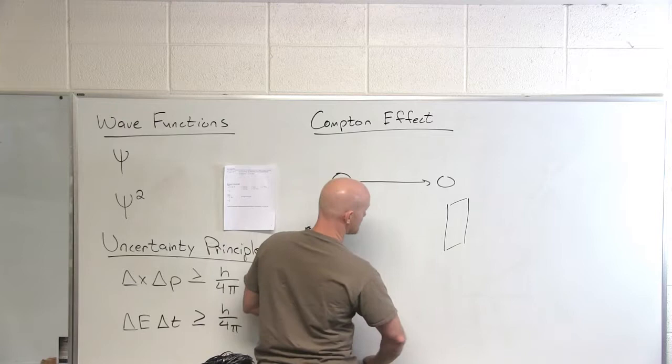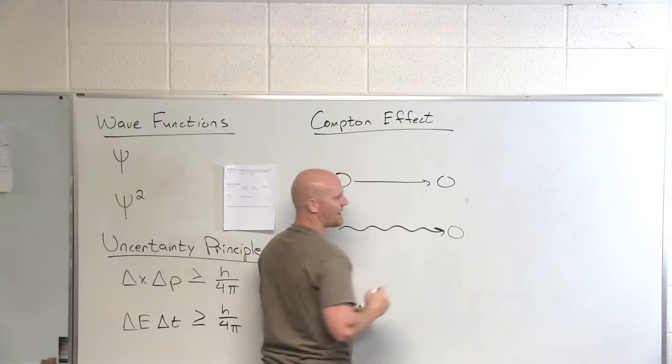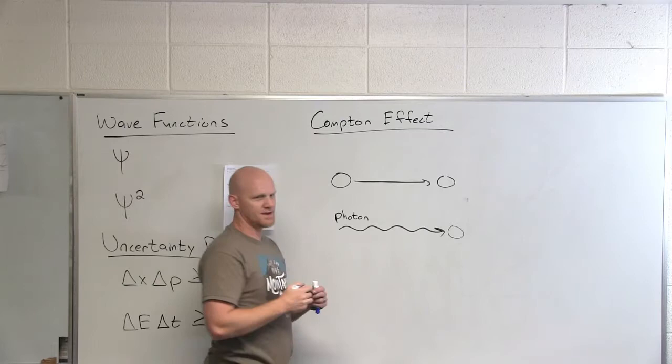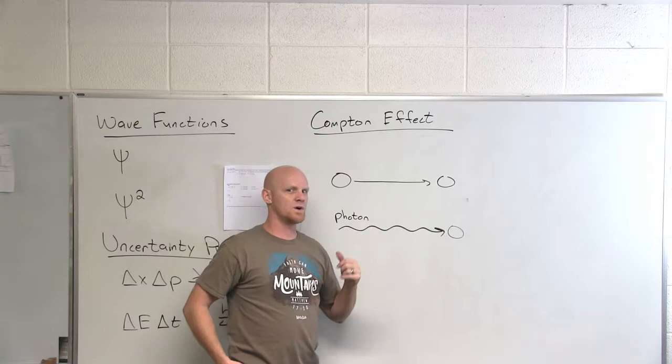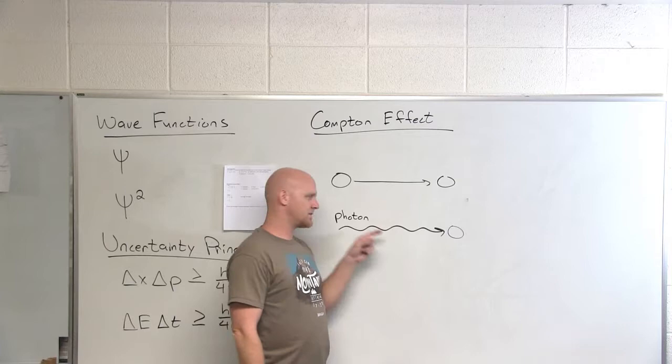Let's just look at this as a billiard ball again, but instead of hitting it with another billiard ball, I'm gonna hit it with light instead. A photon of light might hit this billiard ball and then get scattered one way or another, and impart some of its momentum to this billiard ball as well. Obviously this is not really a billiard ball but it might be an atom that this photon is hitting.